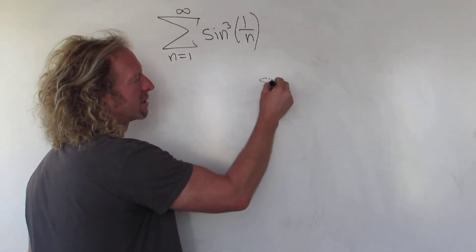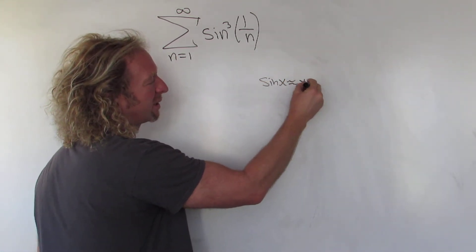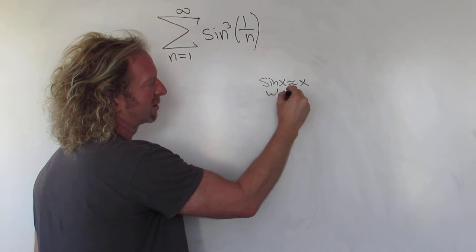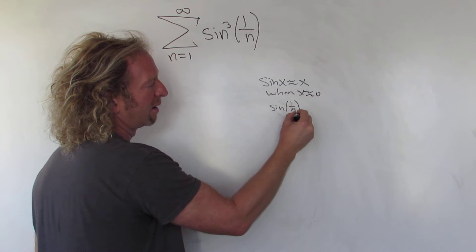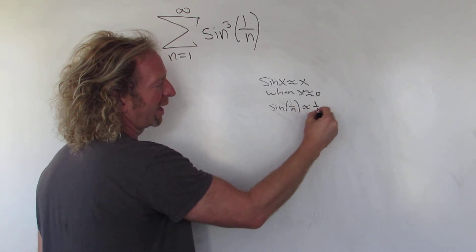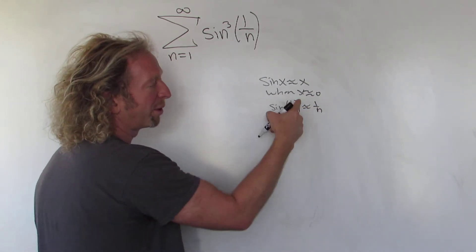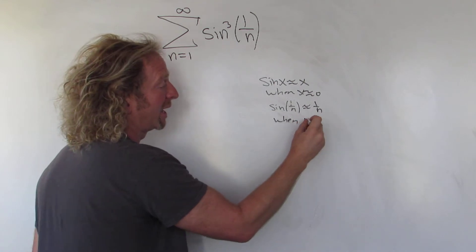Well, sine x is approximately equal to x when x is close to 0. So sine of 1 over n is approximately equal to 1 over n when 1 over n is close to 0. In other words, when n is big.